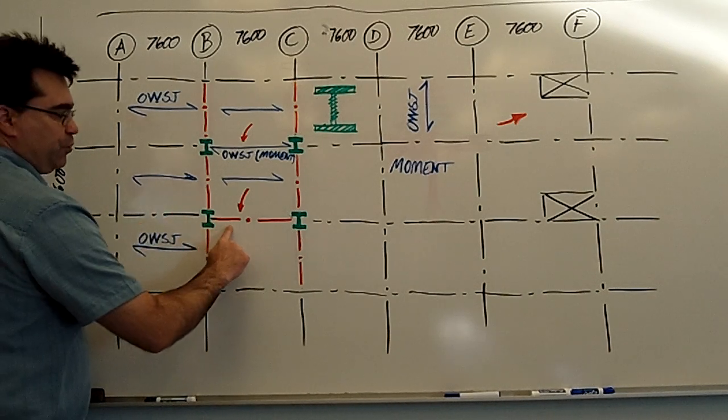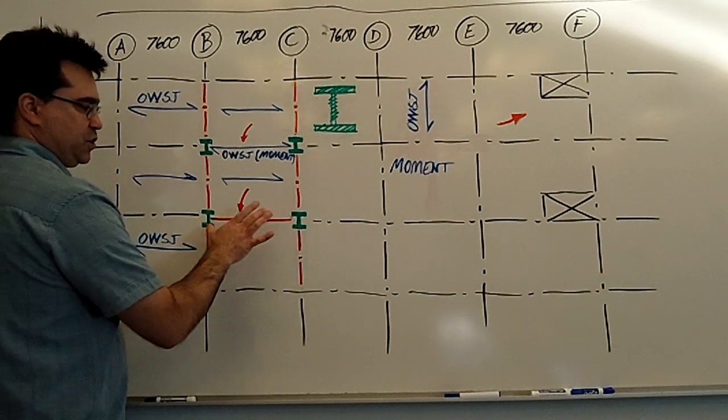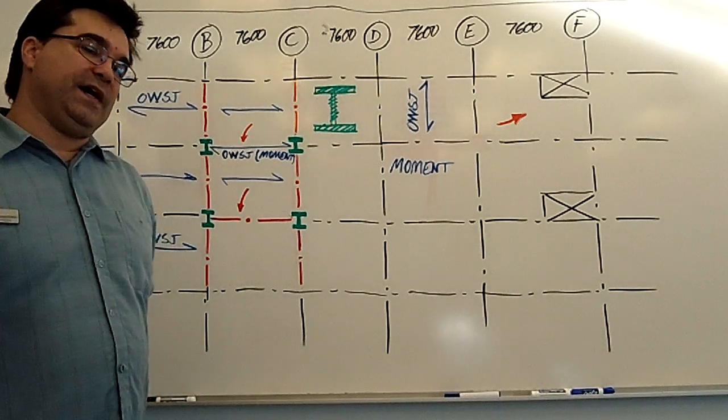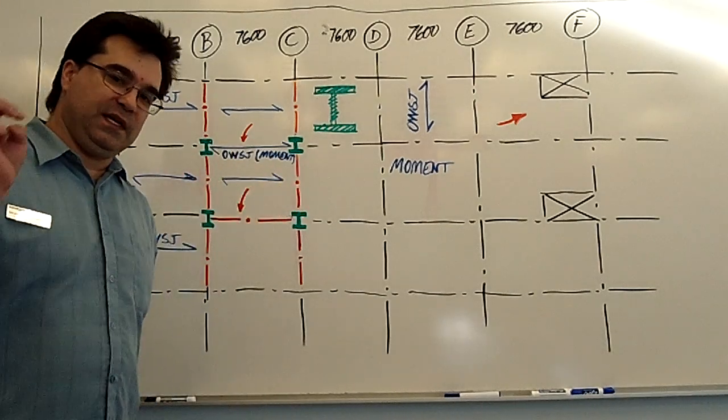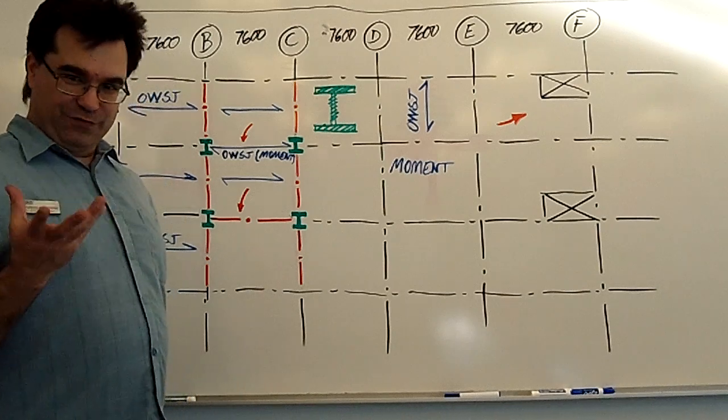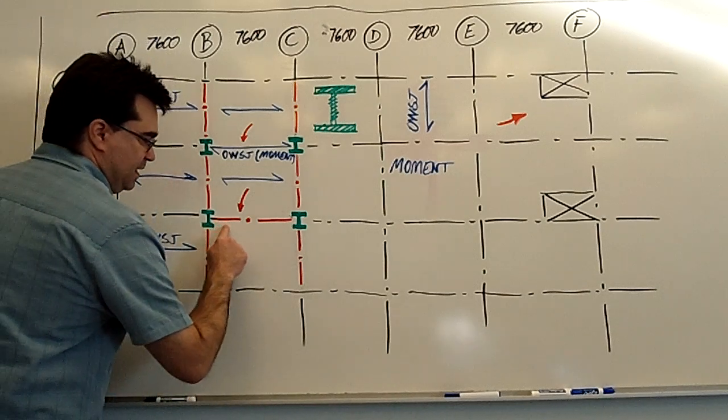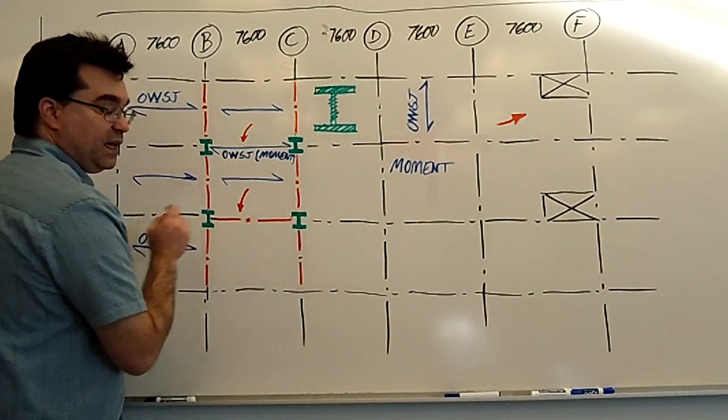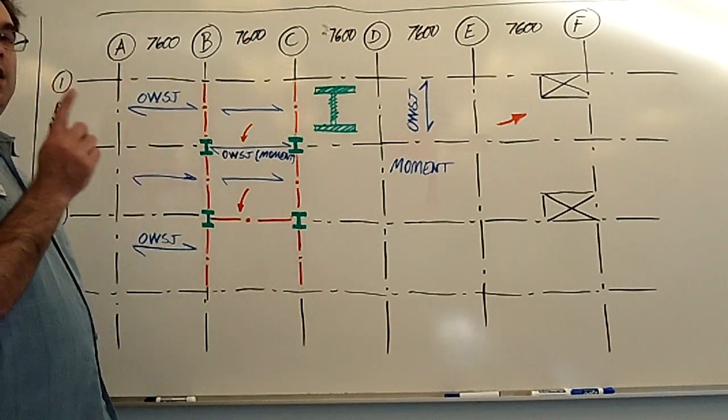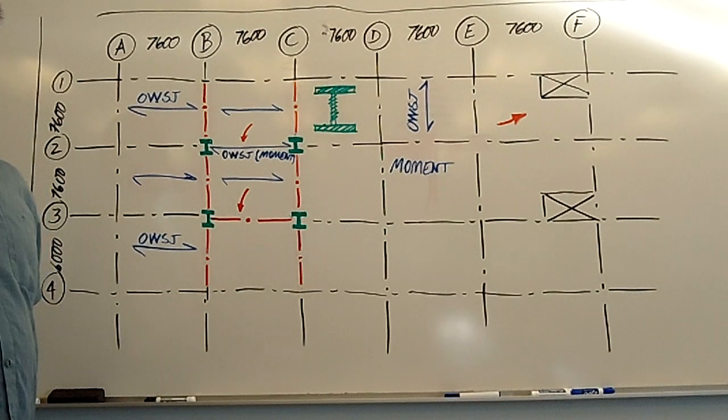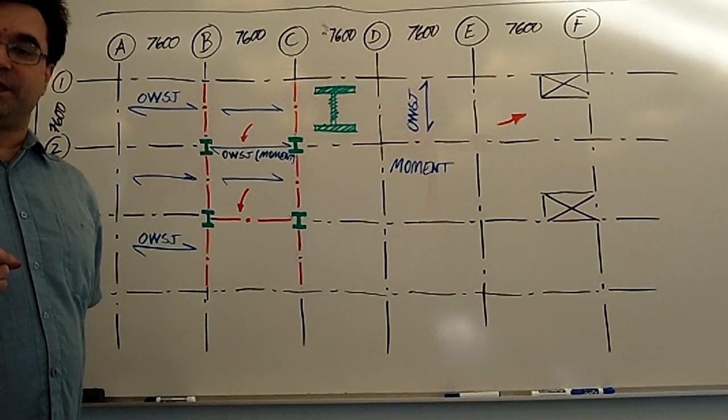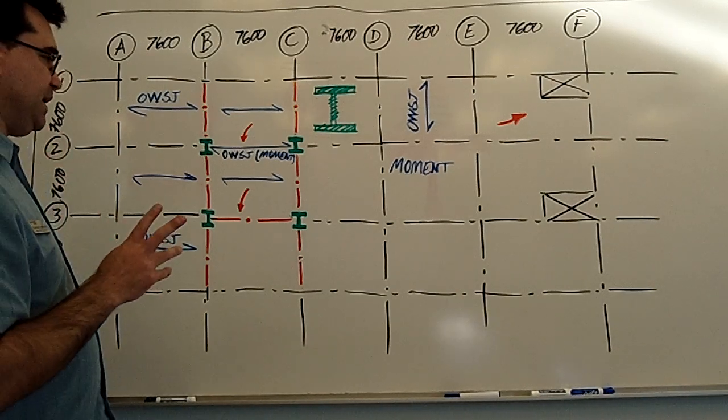So if you have a smaller W section, you can put a W section here to here and then use some of the details I either provided you or the ones that you can find on chapter 19 of the third edition of your textbook for an idea of how to connect this smaller W section to the web of your columns. Or if we choose to use an open web steel joist to connect those two columns, use a moment connection. And here's what it looks like.